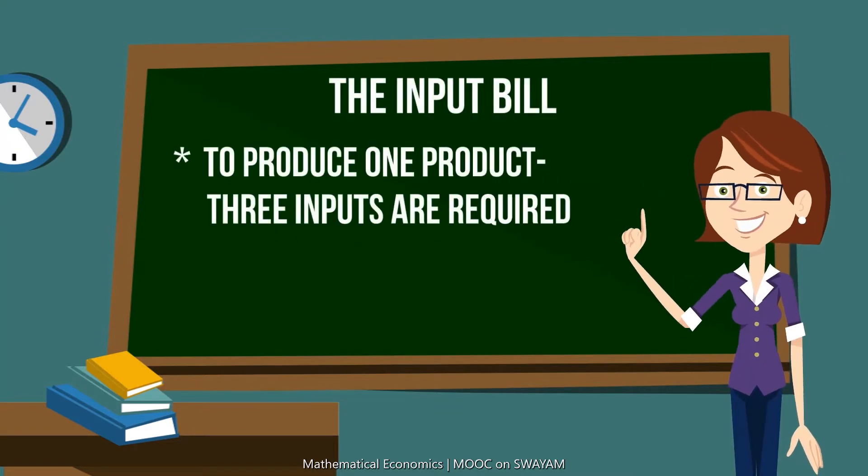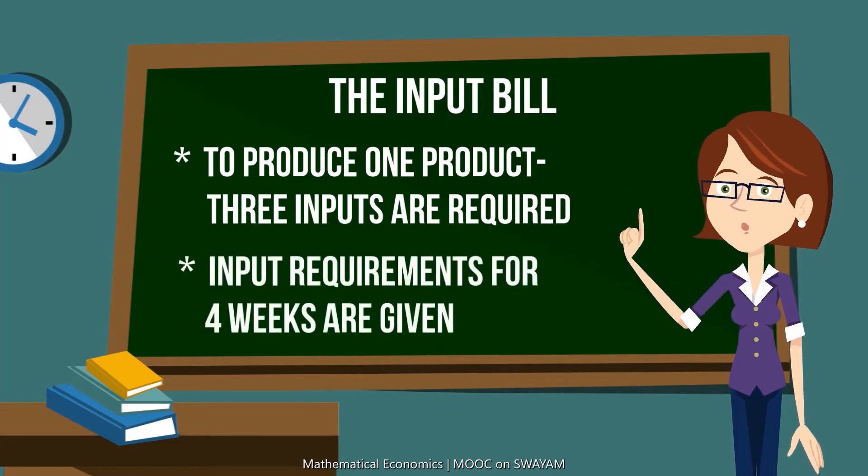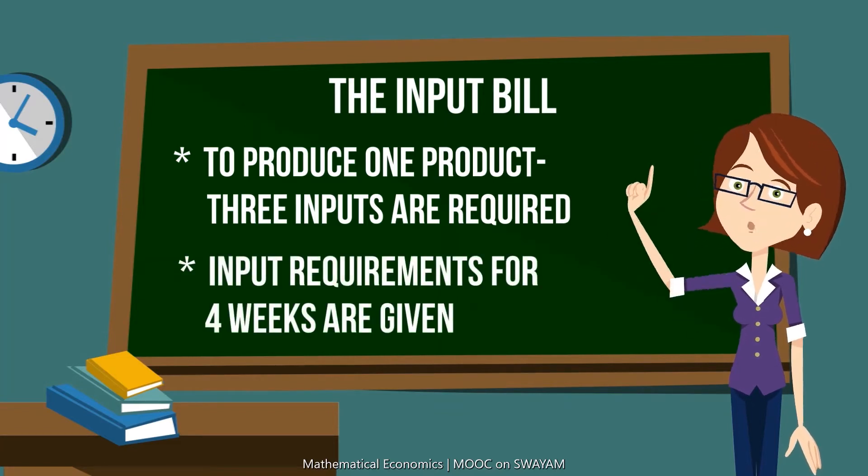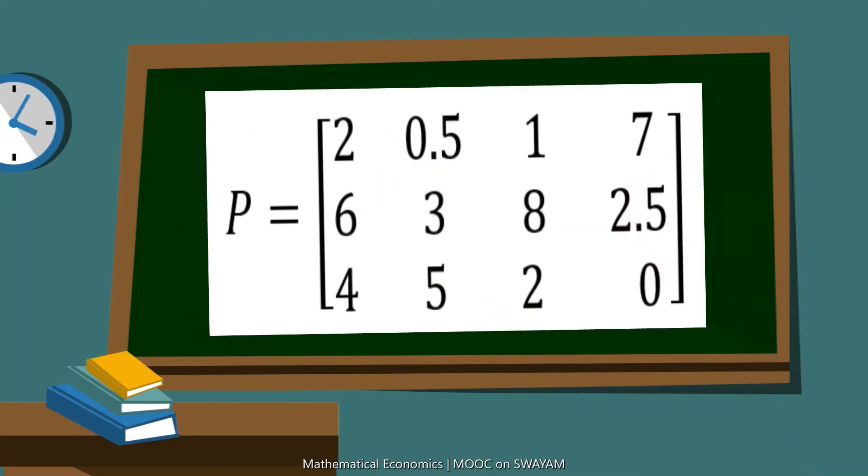A company requires three inputs to produce a product. The input requirements for four weeks are given by matrix P. Pause the video and try to interpret this matrix.